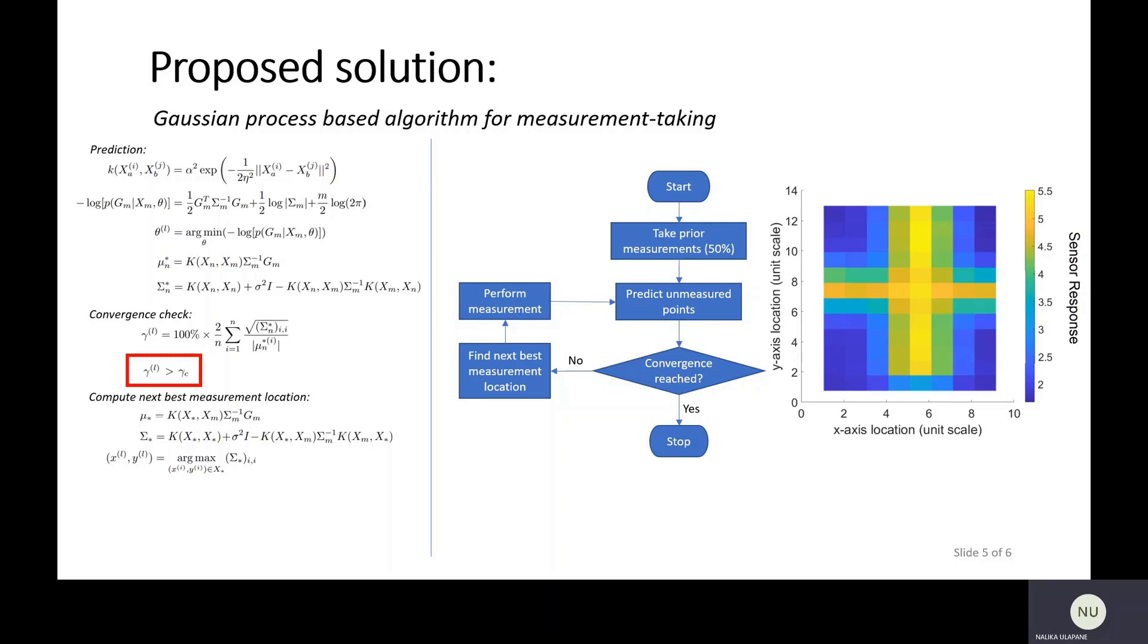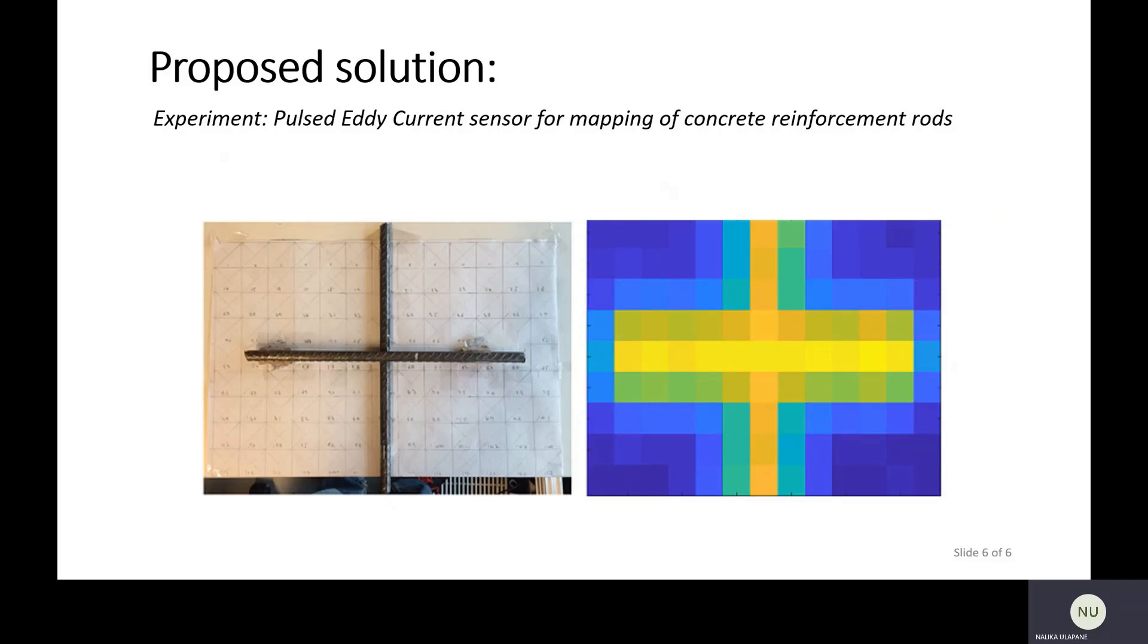That's what we demonstrate through the results of this paper. This approach is not entirely new. This approach is basically discussed a lot in Bayesian Optimization. What we do in this paper is present it in a very succinct form along with a convergence criteria for clarity and ease of use. That's the proposed solution of this paper. How we demonstrate the results of this paper is through a sensing experiment using a eddy current sensor. The eddy current sensor is used as a cover meter to map reinforcement rods inside concrete. That's our little experiment to demonstrate this principle. That is the proposed solution and the contribution of this paper.